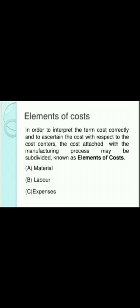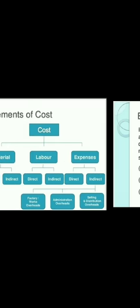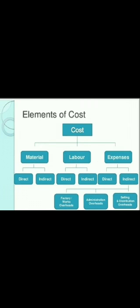There are three major elements of cost and these are materials, labor, and expenses. Material is again divided into two parts: direct material and indirect material. Labor is also divided into two parts: direct labor and indirect labor. Expenses are also divided into two parts: direct expenses and indirect expenses.